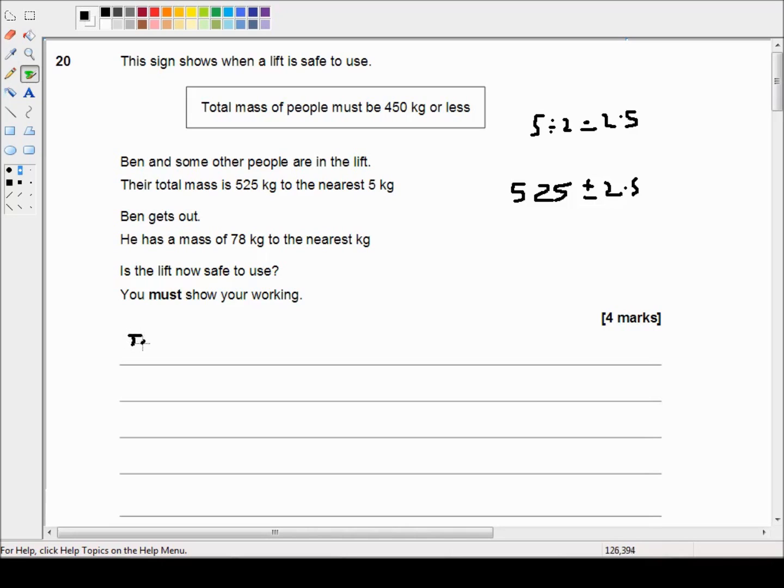So the total mass means 525 minus 2.5, which is 522.5, less than or equal to x less than 527.5. So their total mass is somewhere less than 527.5 kilograms. They can't be more than 527.5 kilograms.